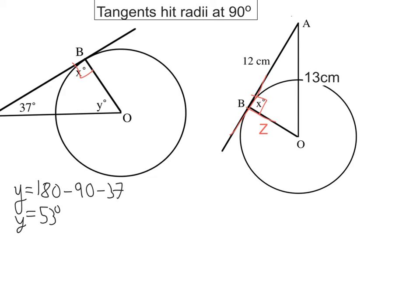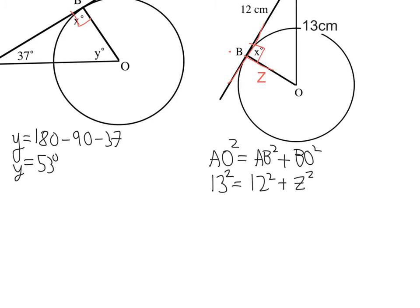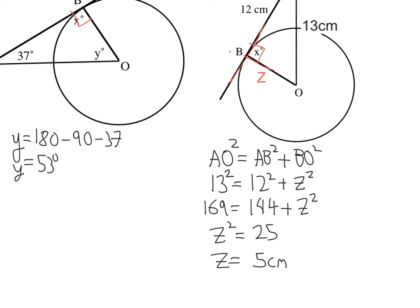We've got two short sides, so AO is my long side — square that. And it's AB squared — that's b and a — then add BO squared, that's my radius. Substituting in the numbers I know: AO is 13 squared, AB is 12 squared, and BO is what I want to work out, so that's z squared. 13 squared is 169, 12 squared is 144, plus z squared. Taking away 144 from both sides gives 25. Square root both sides gives 5. So the answer is 5 centimetres.